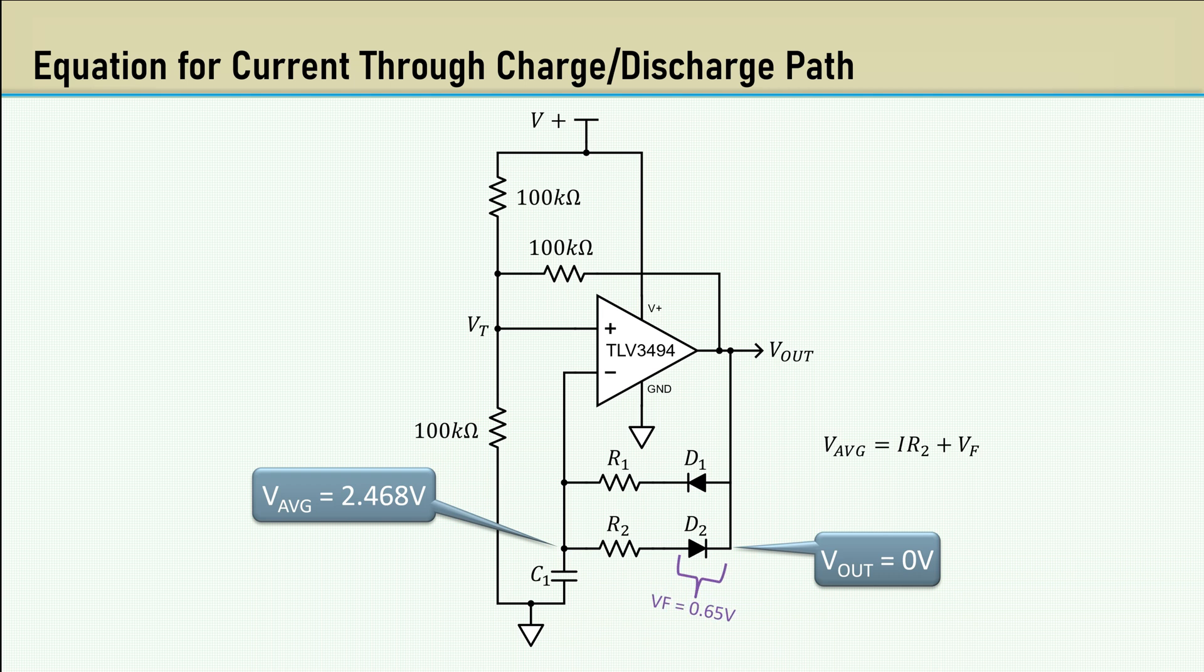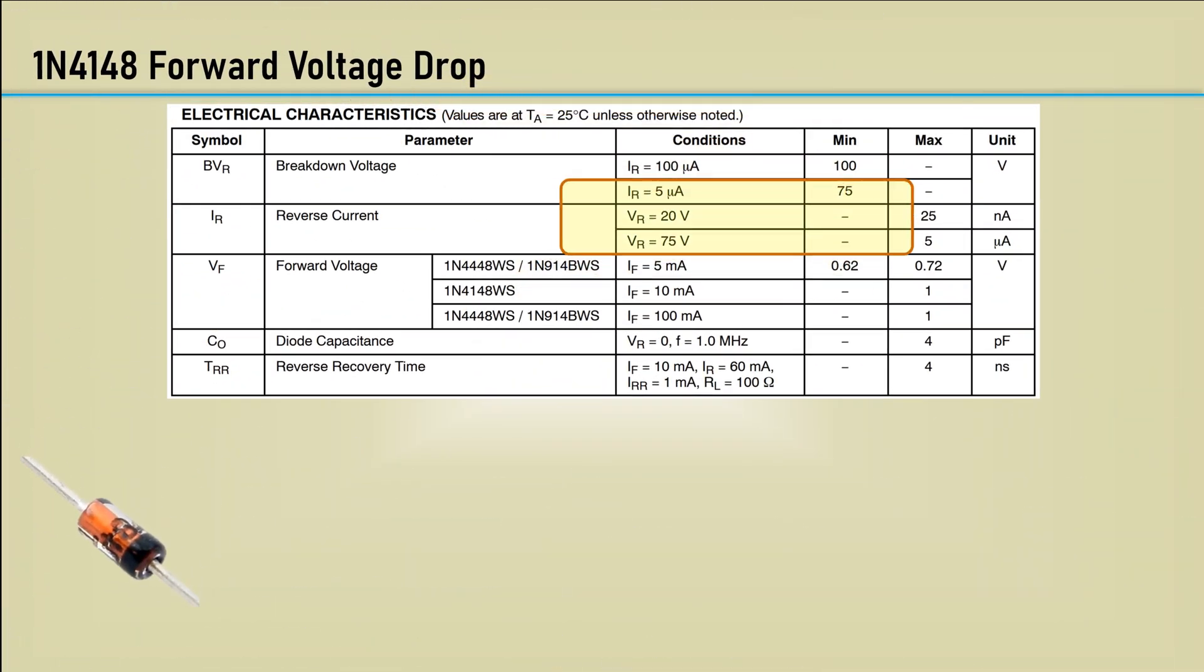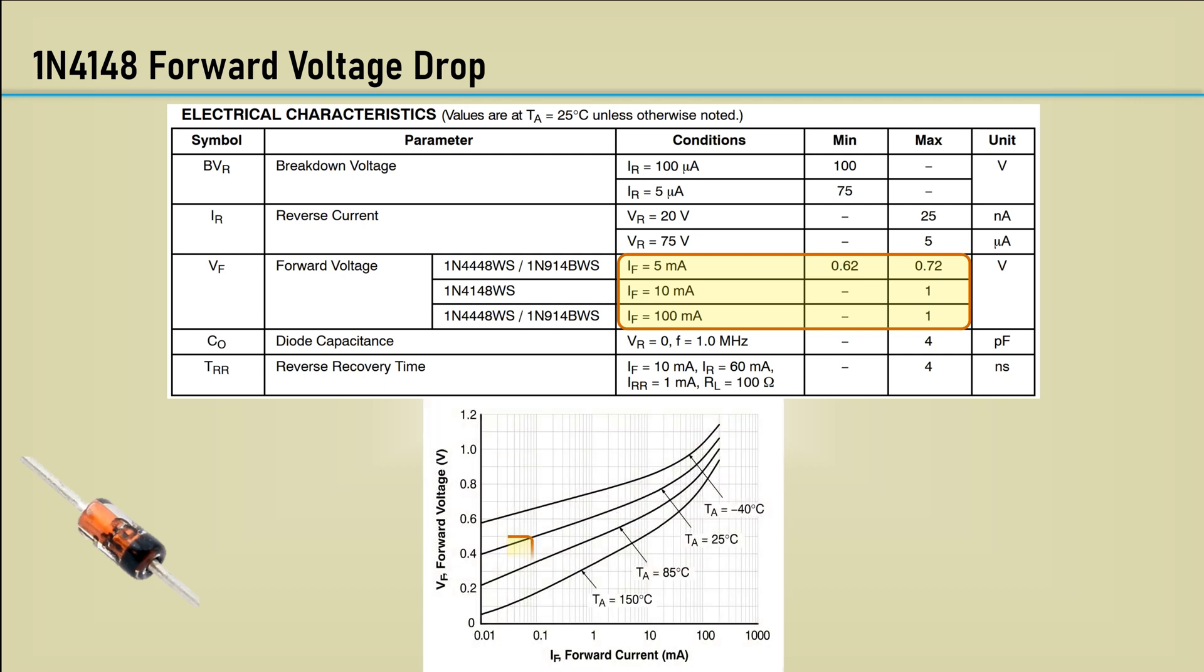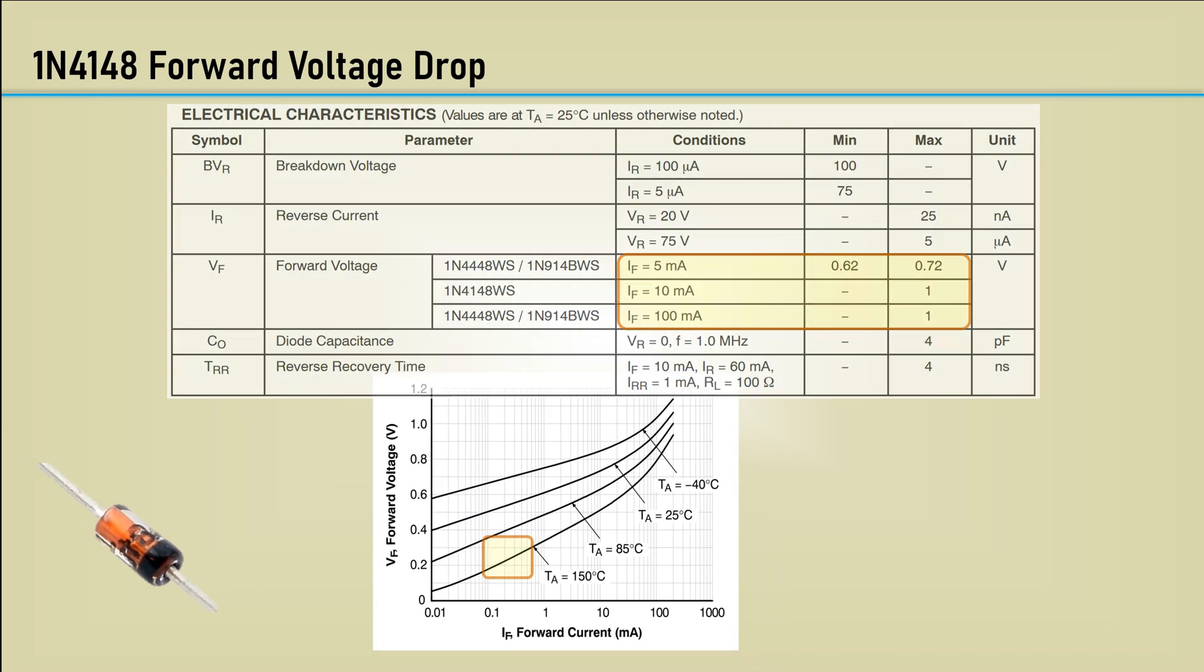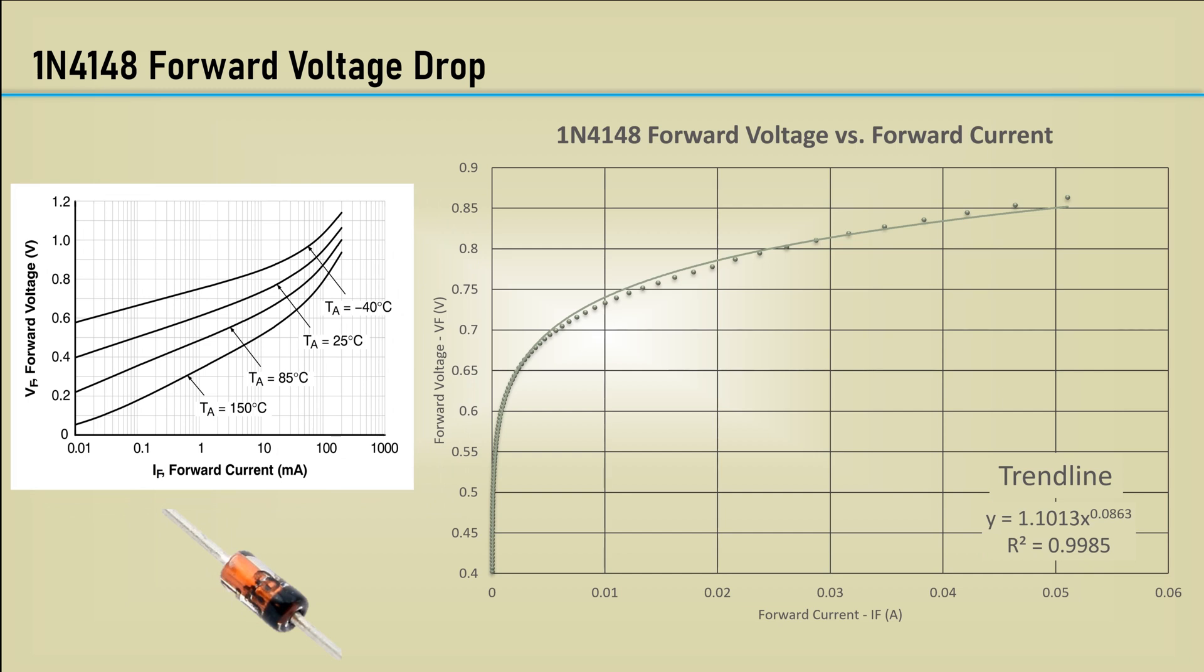Diode drops are usually estimated at around 0.65 volts. That's not going to be accurate because that amount of drop is for a fairly high forward current. These charging and discharging currents are low on the order of tens or hundreds of microamps. Let's look at the datasheet for the 1N4148 diode. The 0.65 number I mentioned is for a forward current of 5 milliamps. For the currents we are dealing with, the voltage drop is going to be down in this region. I digitized the forward voltage versus forward current plot of the 1N4148 and fit it to a power trend line, which yielded a very good R2 value of 0.9985.